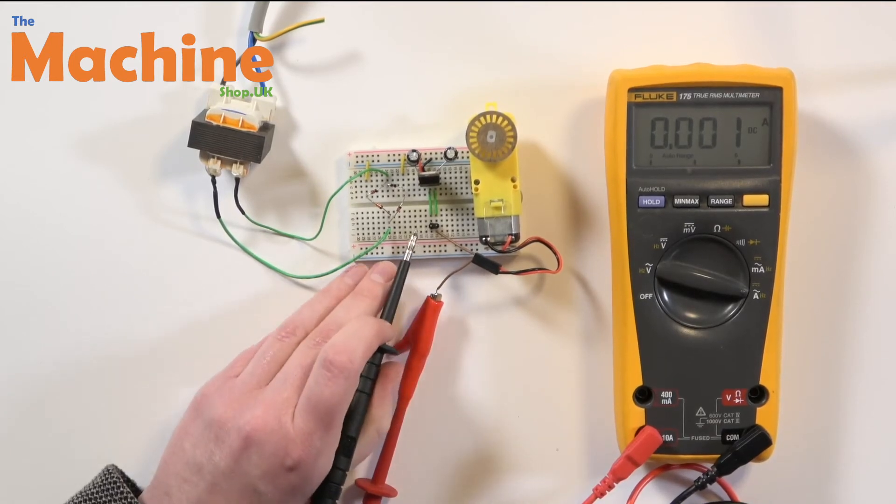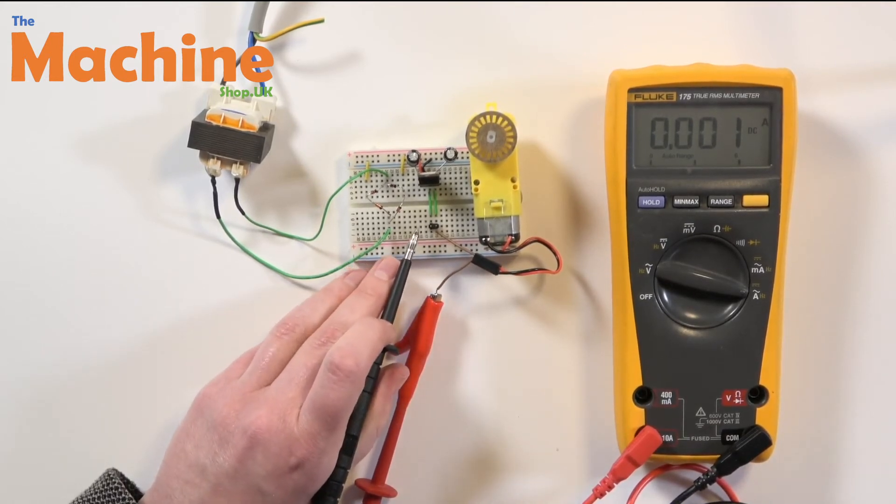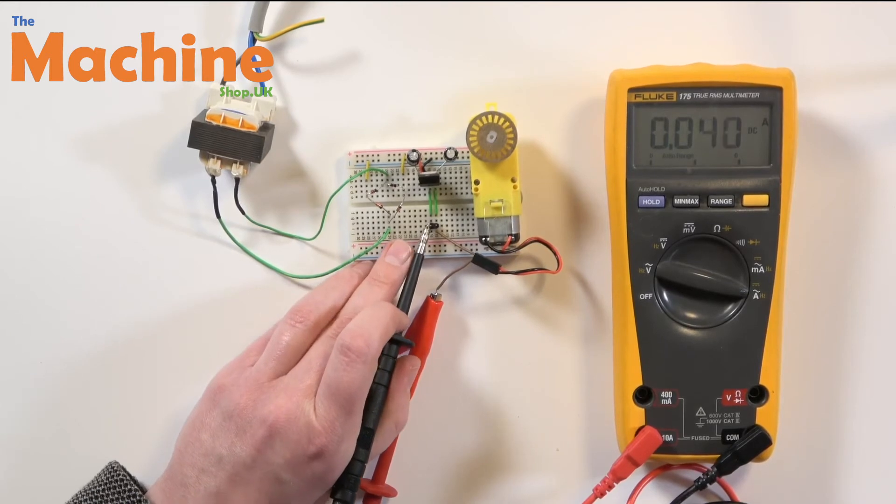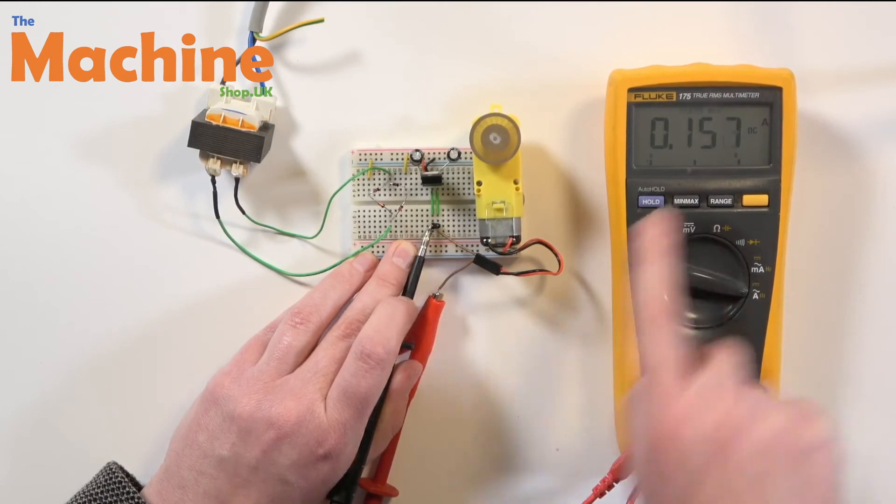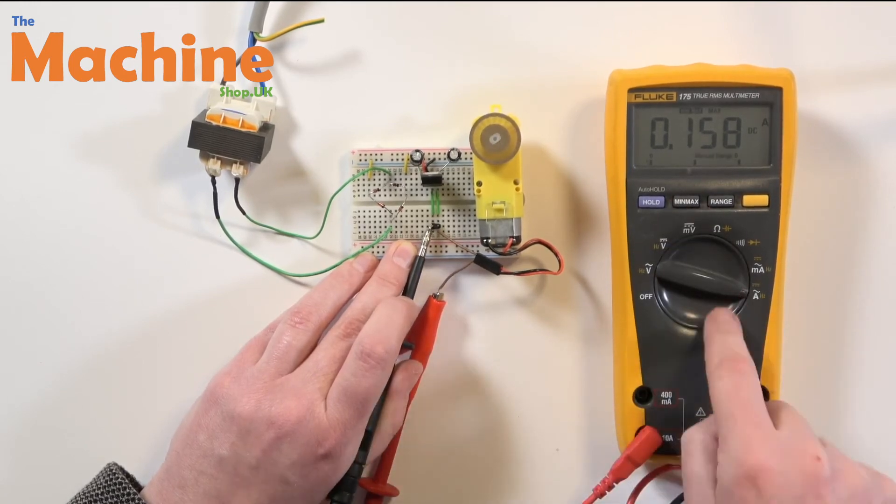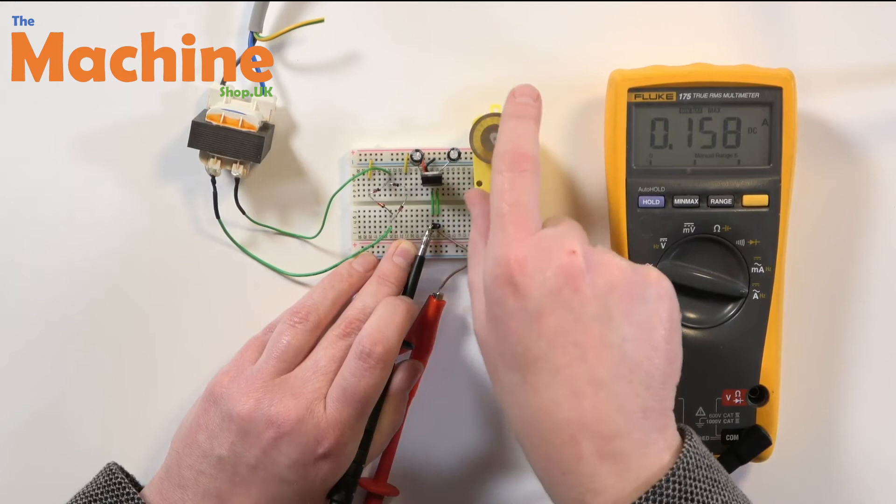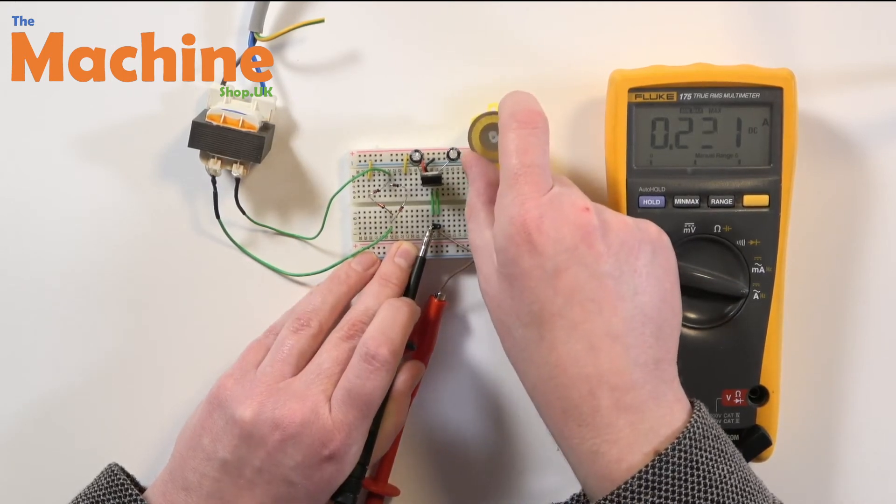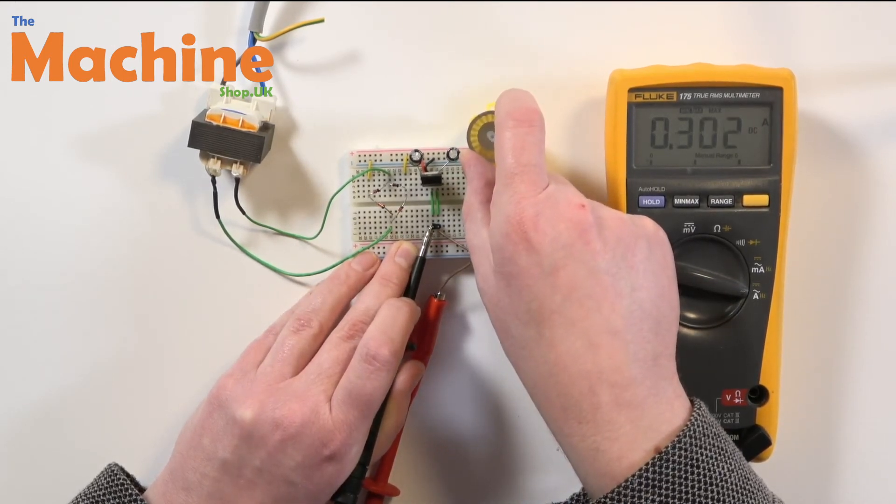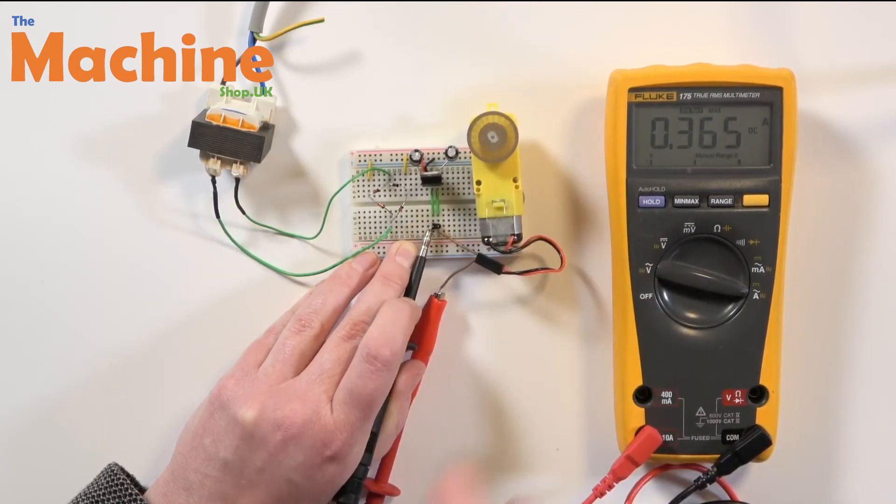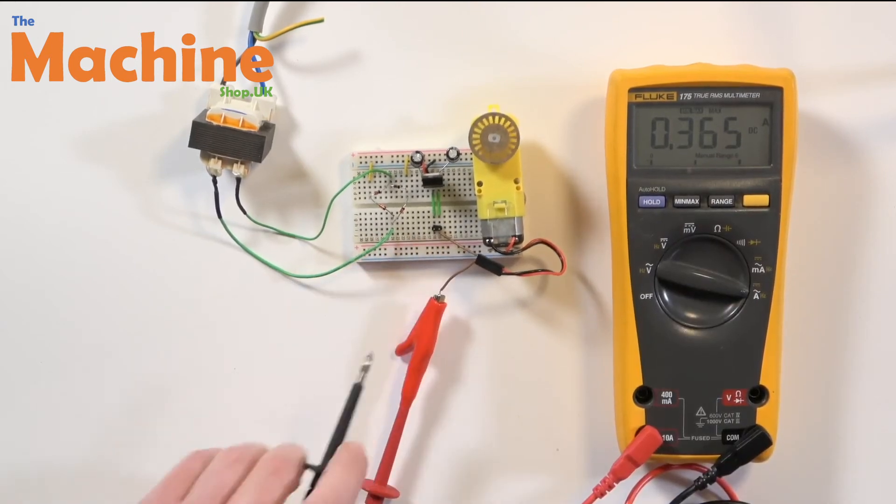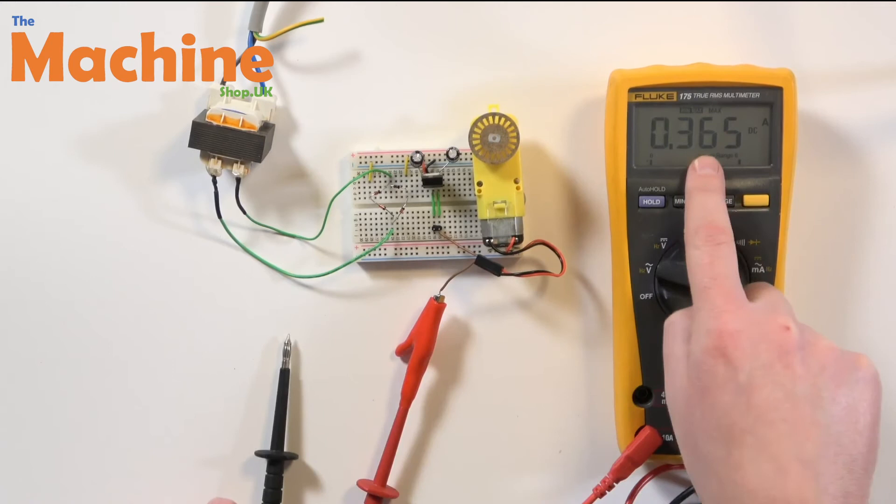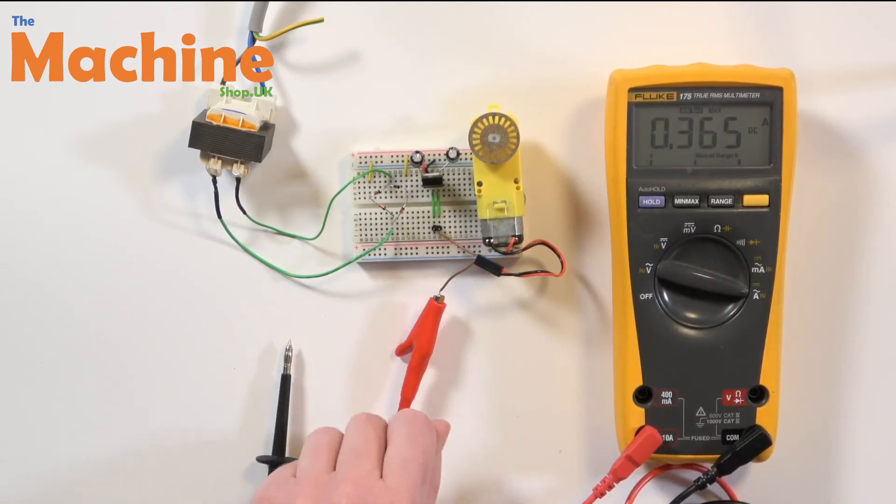Now I want to test it to see how much current it's using when it's under stress. So I'm going to put that back on there and my DVM's got this min max button. So if I press that, now that doesn't appear on all DVMs just because this one's kind of a posh one. Now I'm going to put some stress on my motor. Great. So the maximum current that I got was 365 milliamps. Cracking. So as long as my circuit can maintain that amount of power to that motor then I know that's going to keep working.